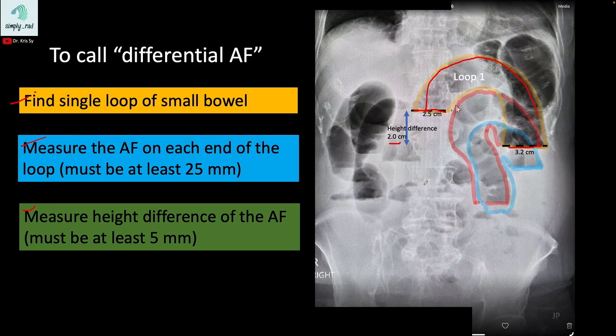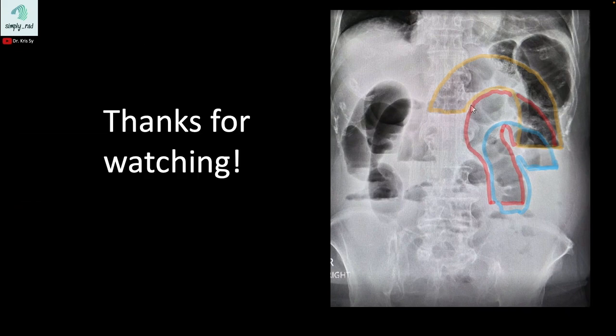Now, are air fluid levels seen only in mechanical obstruction? The answer is no. That is why our reports always require clinical correlation, because differential air fluid levels are not only seen in small bowel obstruction — whether complete or incomplete — but can also be seen in adynamic ileus. Therefore, serial radiographs plus correlation with bowel sounds is superior compared to a single radiograph.